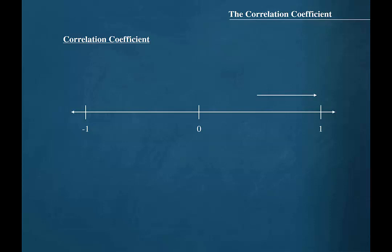When the linear correlation coefficient has a value close to 1, it indicates a stronger positive relationship between the variables. In other words, as the values of the explanatory variable increase, so do the values of the response variable.